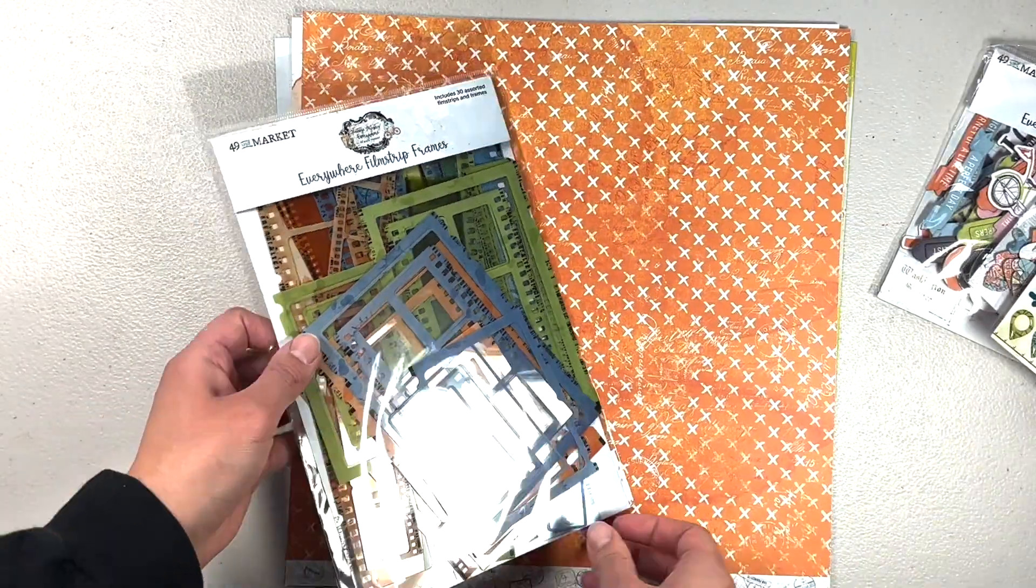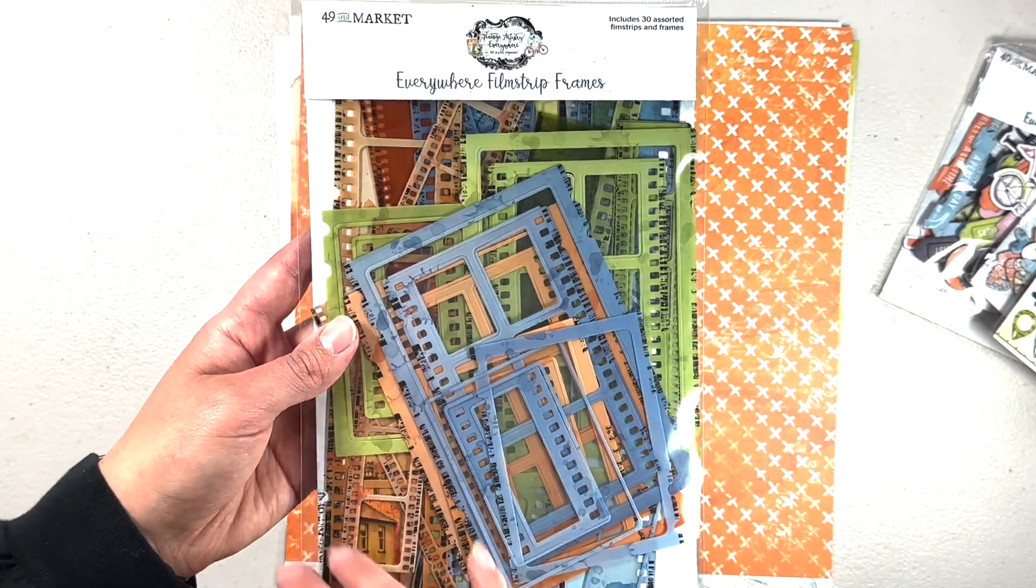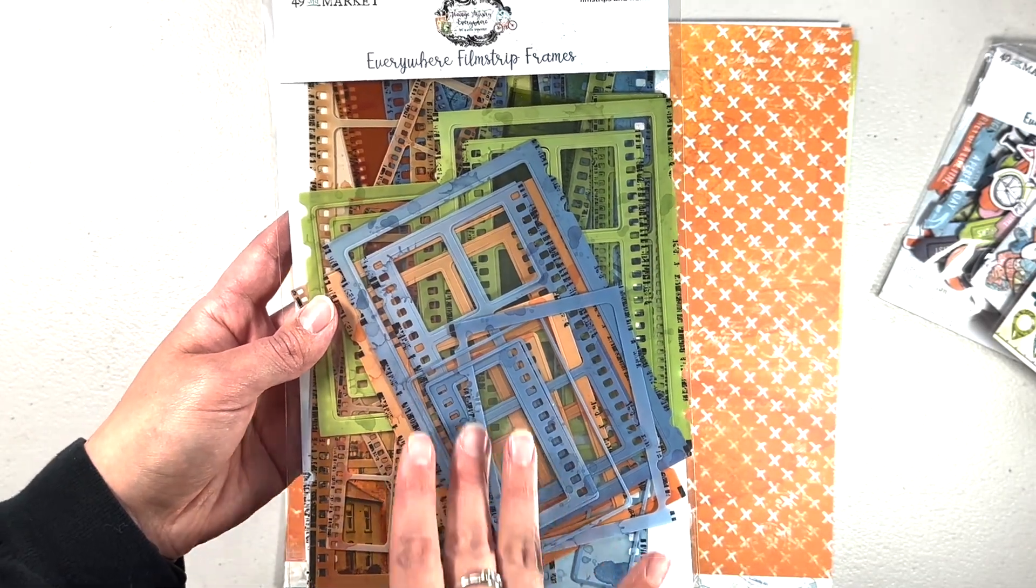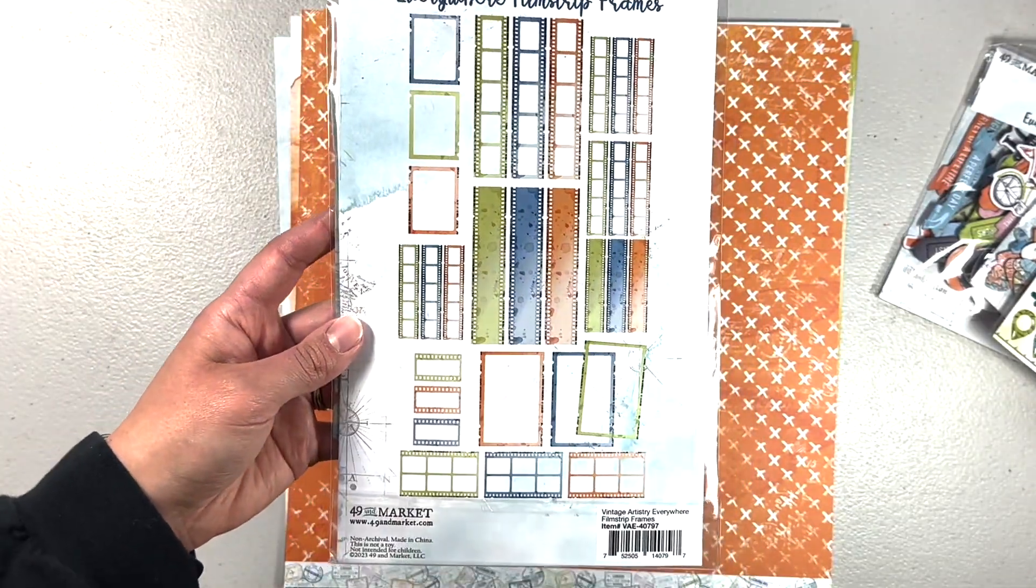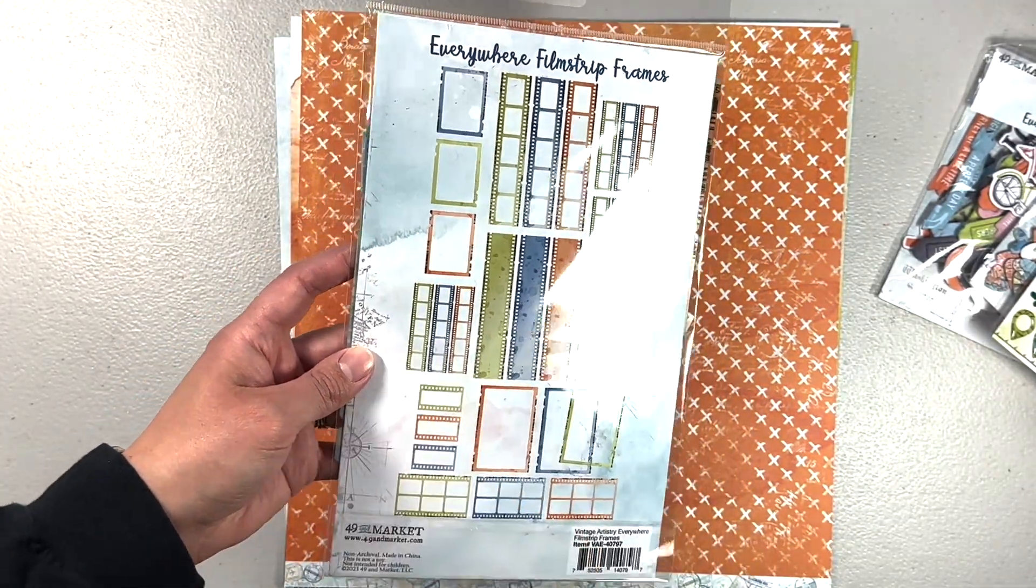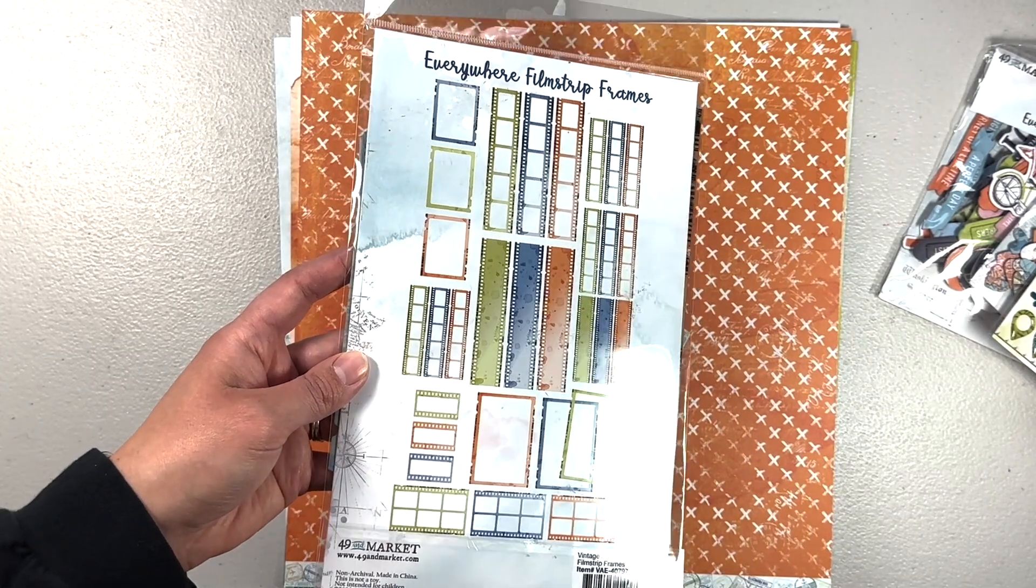Then I got the film strip frames. I am loving this trend right now with the film strips. What better than lots of different colors? You get the green, the blue, and the orange.